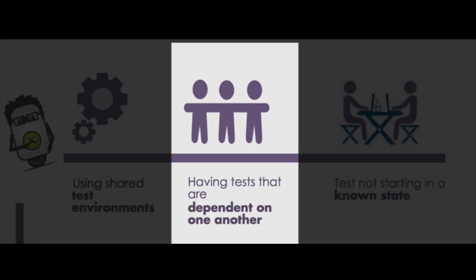Number five, having tests that are dependent on one another. You want your tests to be as atomic and independent as possible, especially as you start ramping up your test efforts and running tests in parallel. You need each test to run against any environment on its own and not worry about running after a certain number of other tests. You want them as independent as possible.